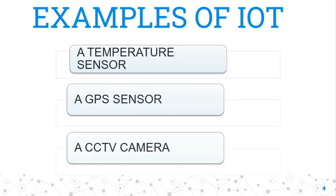Secondly, a GPS sensor. A GPS sensor is used to track or find the location of any person. For example, you may have heard about the Pathao app. When you open the app, you can see the cabs or vehicles available near you. This is also because of IoT — there is a GPS sensor in those vehicles, and we are able to see the cabs and vehicles near us. This is happening because of the GPS sensor and IoT.